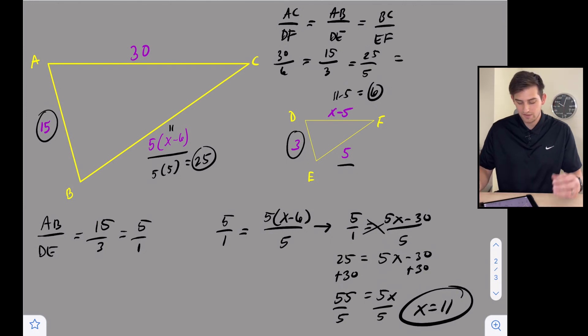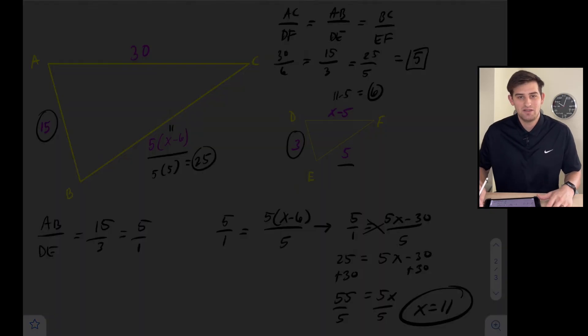And we had 25 over 5. So notice on all of these, 30 divided by 6 is 5, 15 divided by 3 is 5, and 25 divided by 5 is 5. So these two triangles are similar when X is equal to 11. And that is the side-side-side similarity theorem.